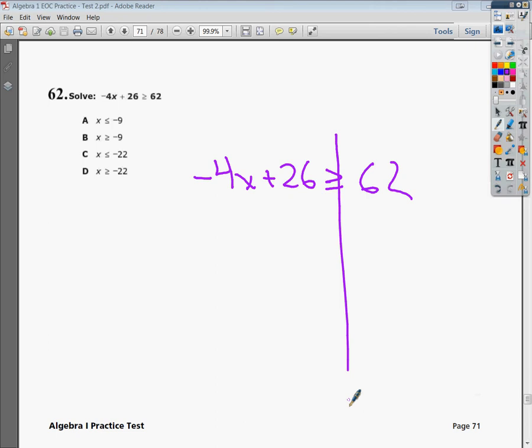As is the case with 26, I'm trying to get x by itself. The plus 26 is a little bit further away than that negative 4 which is actually touching the x. So I'm going to get rid of plus 26 by subtracting it. But in math, if we do something to one side of the equation, we must do it to the other side as well. So I do 62 minus 26 and I get 36.